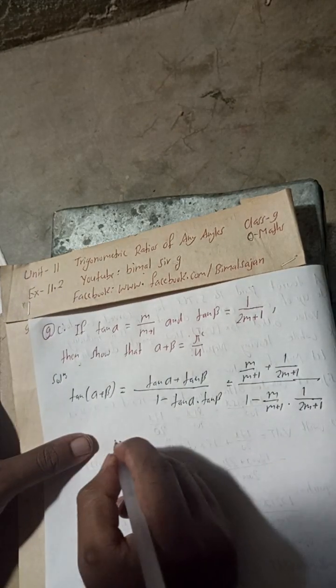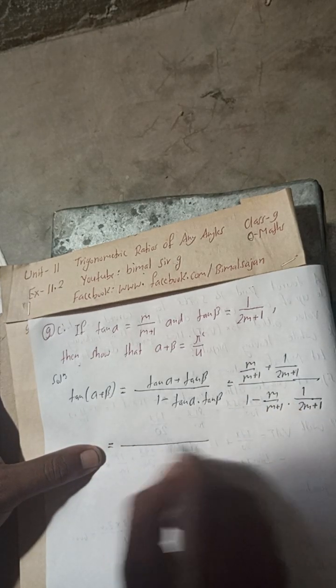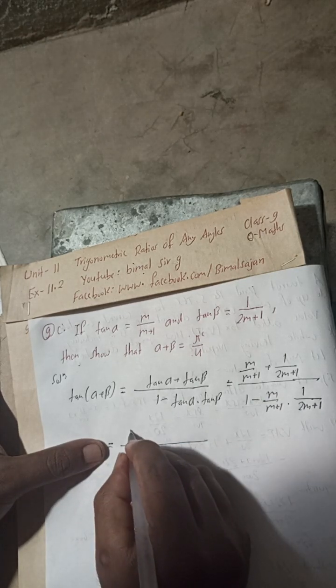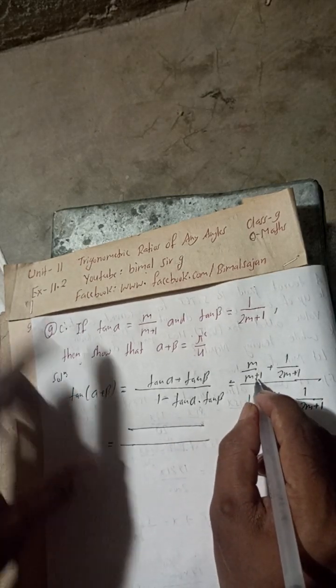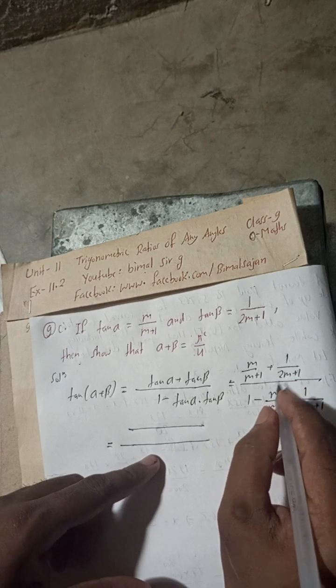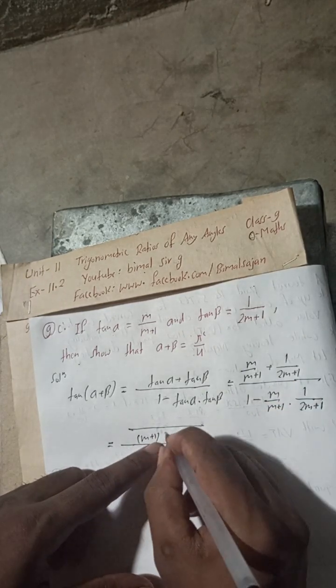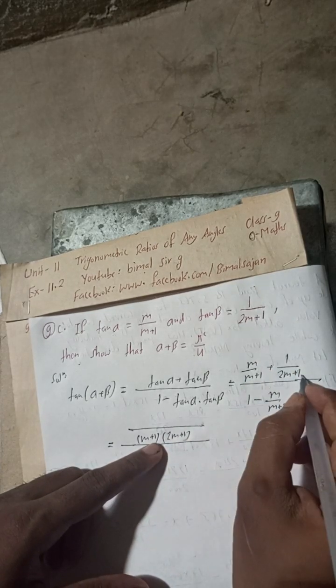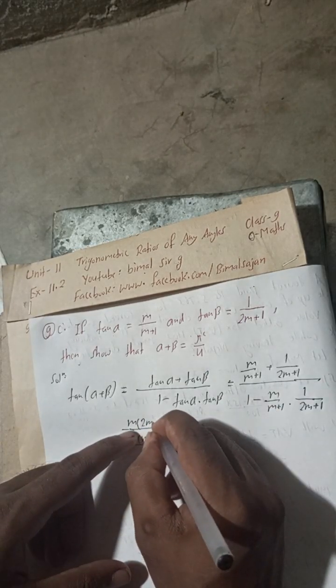Above this there is the LCM. (m+1) × (2m+1) is the LCM here. So multiply m with 2m+1, this is m × (2m+1) plus, and multiply 1 with m+1.